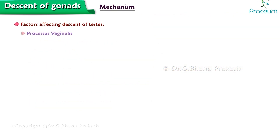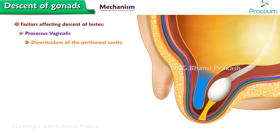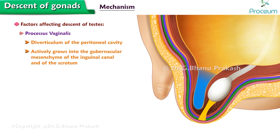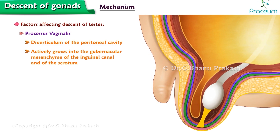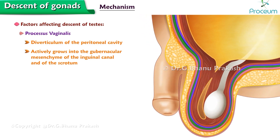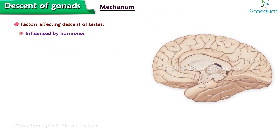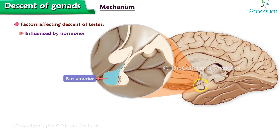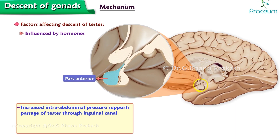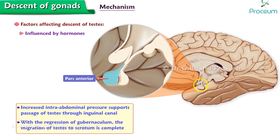Another factor is the processus vaginalis. This is a diverticulum of the peritoneal cavity, which actively grows into the gubernacular mesenchyme of the inguinal canal and of the scrotum. While descending, the testes invaginate the processus vaginalis from behind. After the descent of the testes is completed, the processus vaginalis loses all connection with the peritoneal cavity and becomes the tunica vaginalis. The last factor is that descent is greatly influenced by hormones secreted by the pars anterior of the hypophysis cerebri. Increased intra-abdominal pressure supports the passage of the testes through the inguinal canal. With the regression of the gubernaculum, the migration of the testes to the scrotum is complete.